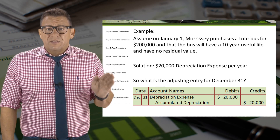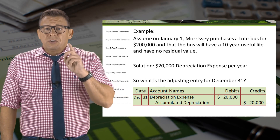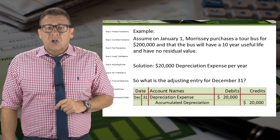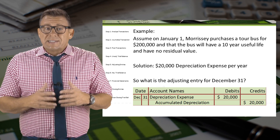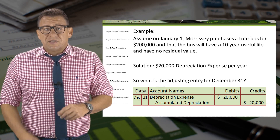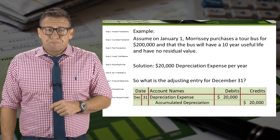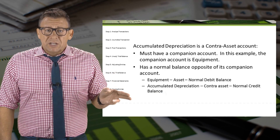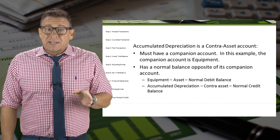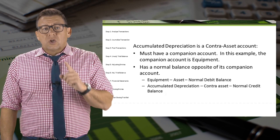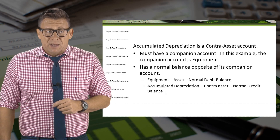Thus, we cannot credit the equipment account until that balance is zero. We need to use a new account called accumulated depreciation. This account's purpose is exactly what the name describes — it is the accumulation of all of the year's depreciation expense. Accumulated depreciation is a contra-asset account. This means that it is an asset, but it has a normal credit balance rather than a debit balance like all of our other asset accounts.